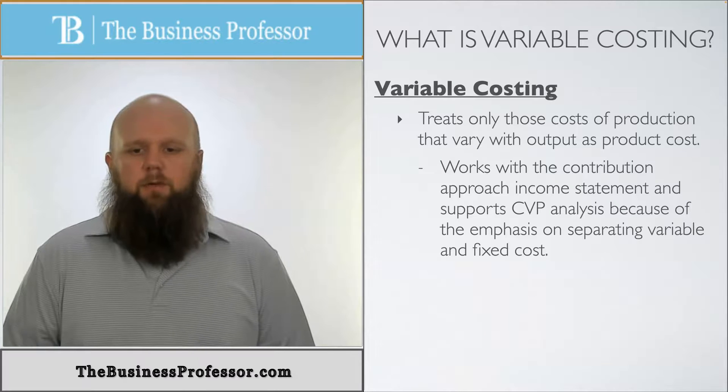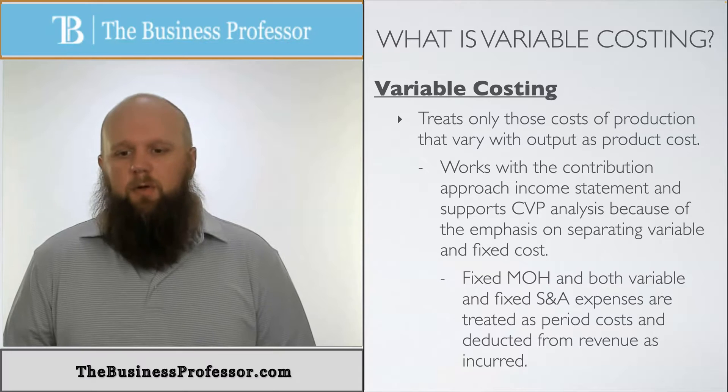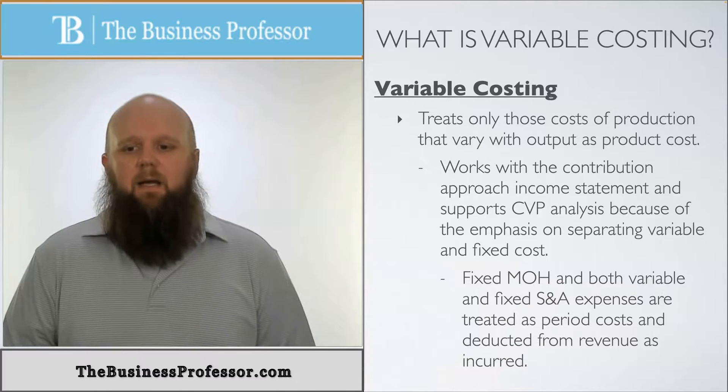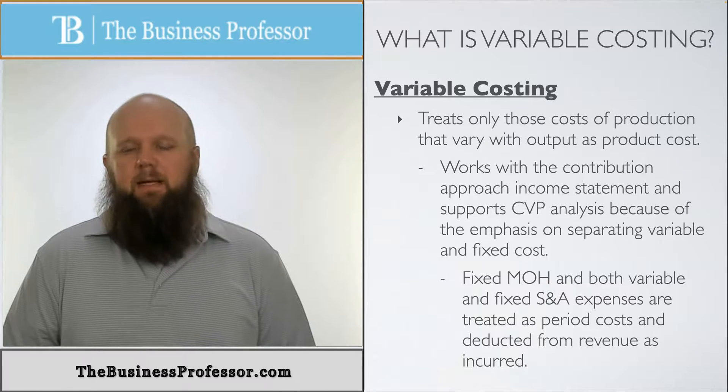On the other side we're going to use fixed manufacturing overhead and include that into both the variable and fixed S&A and they're going to be treated as period costs and are deducted from revenue as incurred.